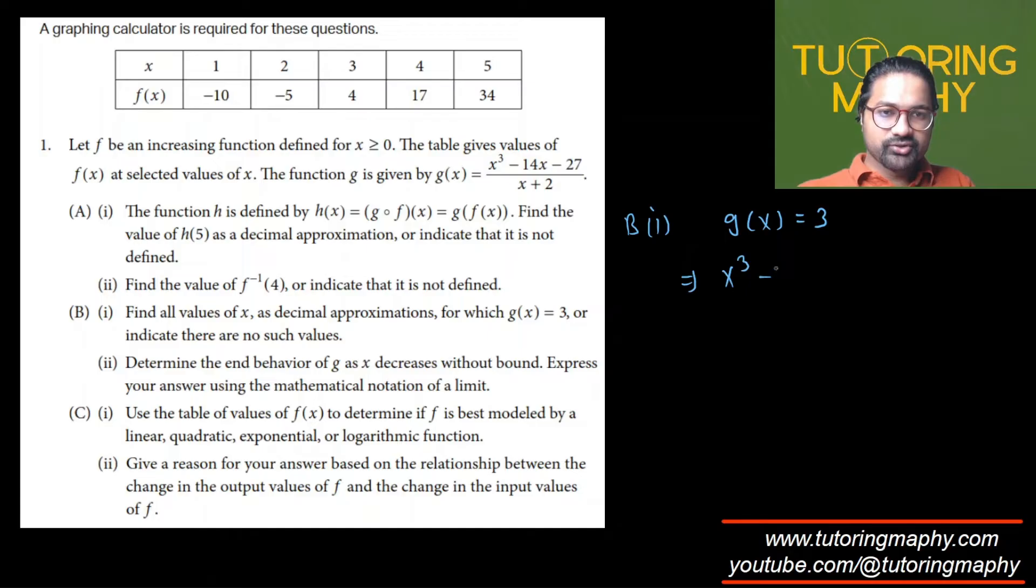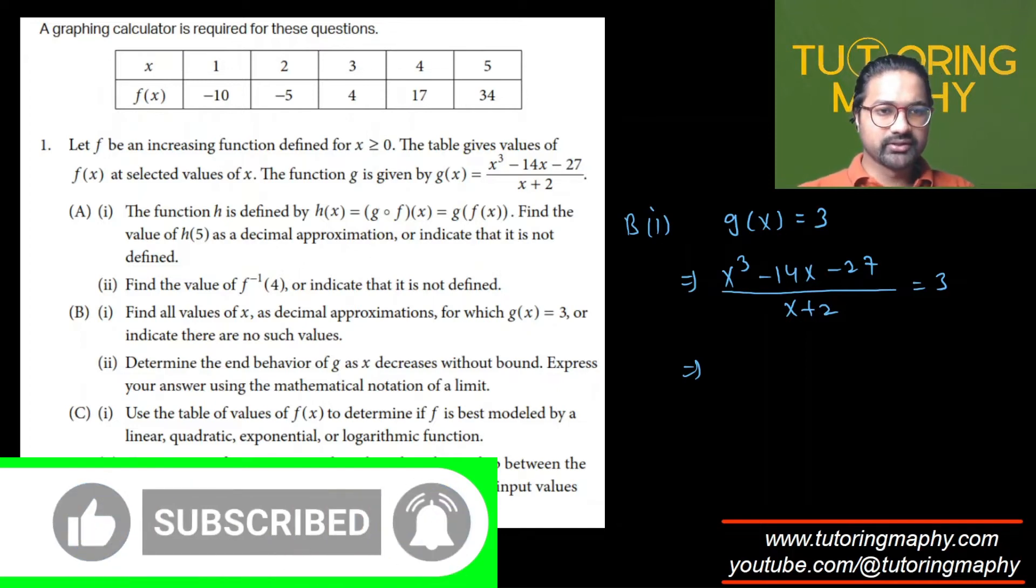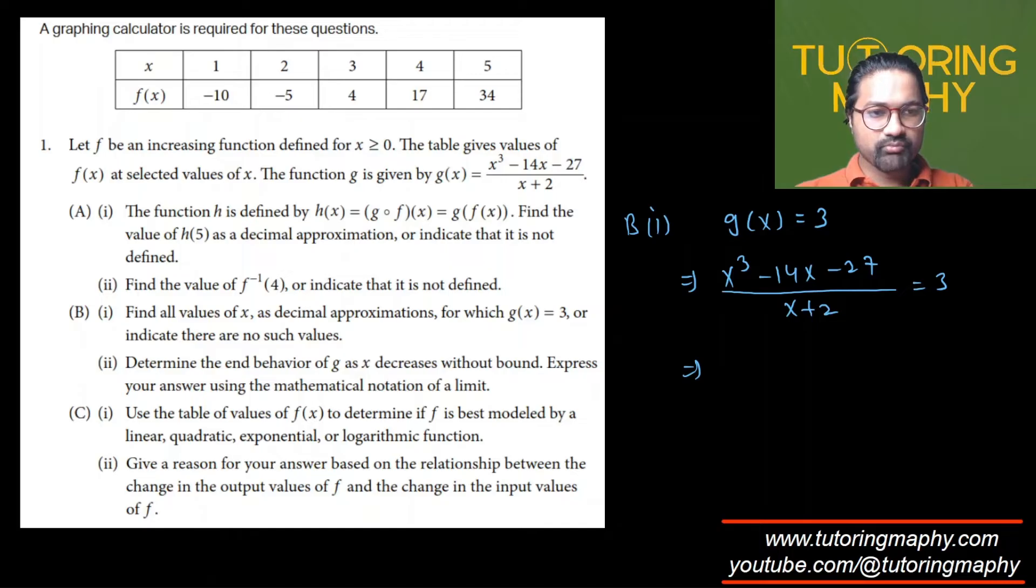G(x) is x cubed minus 14x minus 27 over x plus 2, and that equals 3. This is a cubic equation. There's no need to solve manually; graphing calculators are allowed. Using Desmos, I got the answer as 4.875 up to three decimal places, so 4.88 up to two decimal places.